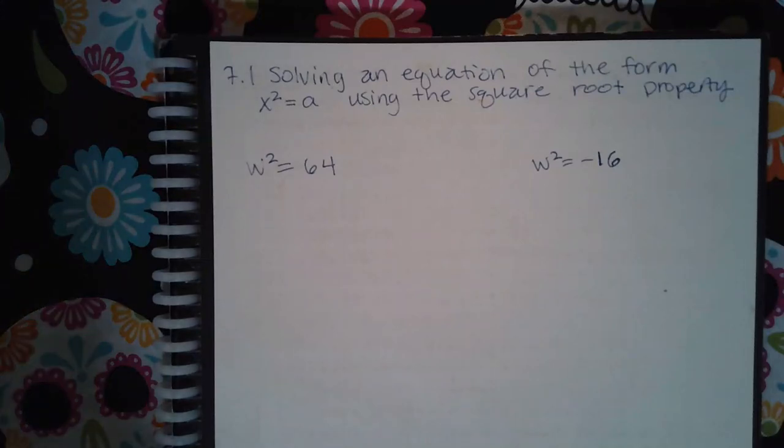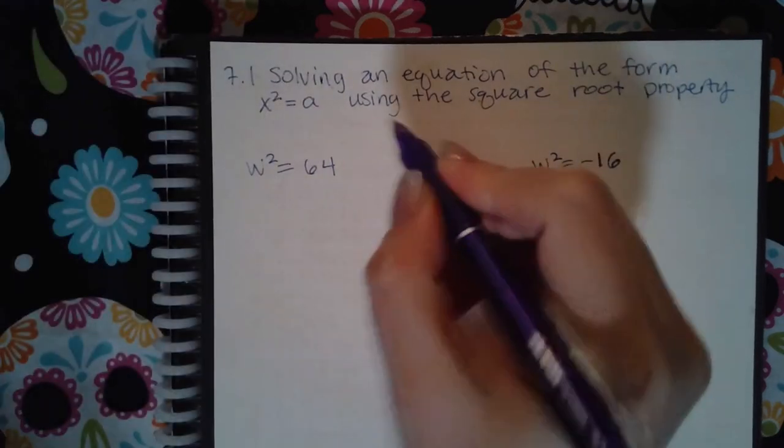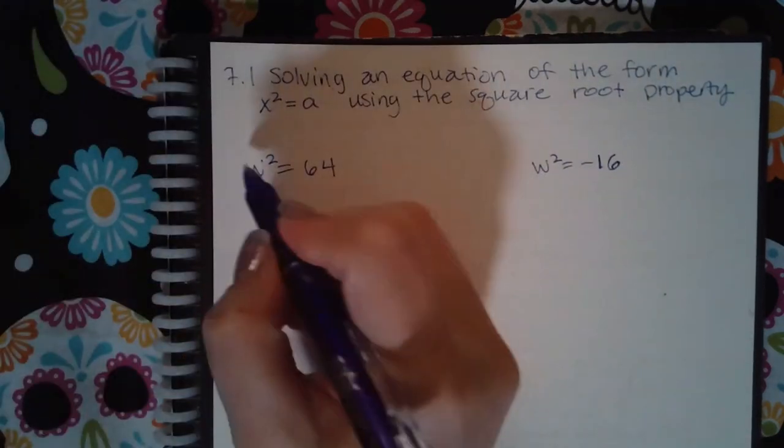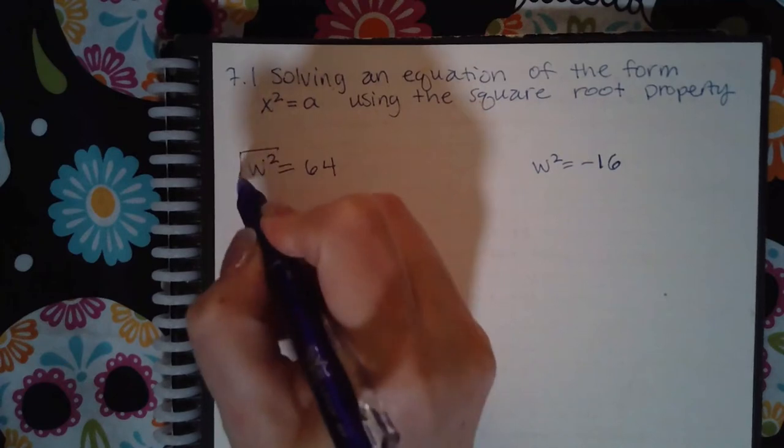This is 7.1: solving an equation of the form x²=a using the square root property. The square root property tells us that if we take the square root on both sides of this equation,